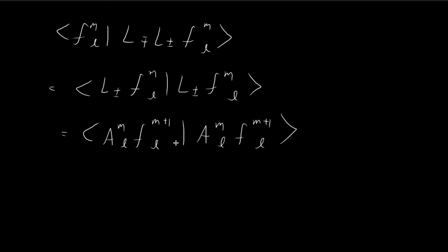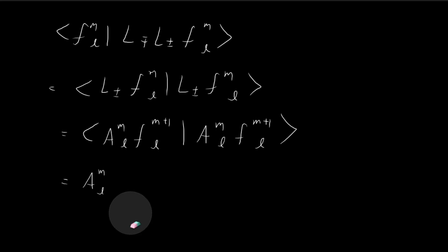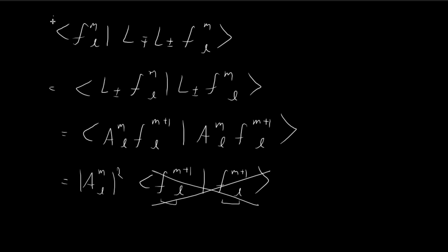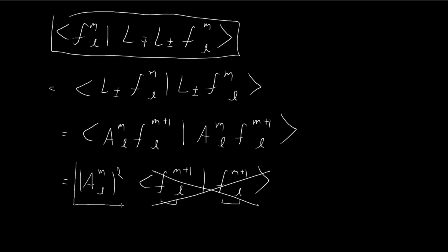Since A_ml is a constant, I can pull it outside. Because it appears in the left-hand component, it becomes the conjugate of A_ml. When both multiply together, we get |A_ml|². By the assumptions of this problem, the function F_{M±1,L} is normalized, so ⟨F_{M±1,L} | F_{M±1,L}⟩ = 1. Therefore this inner product equals |A_ml|².